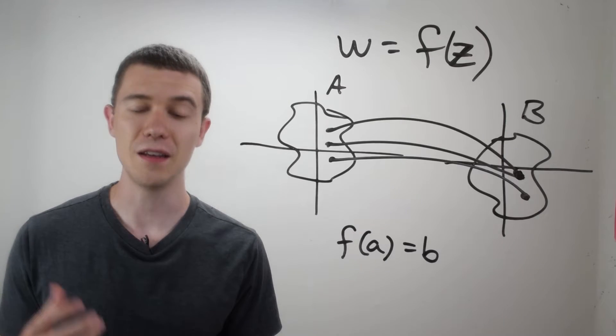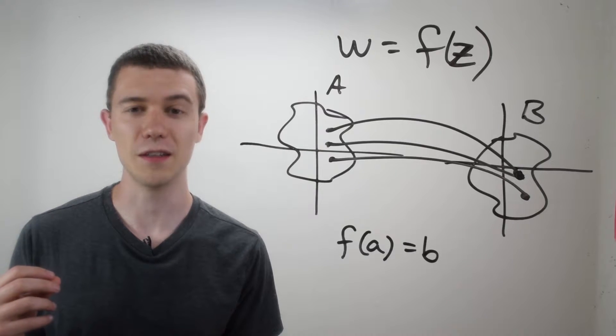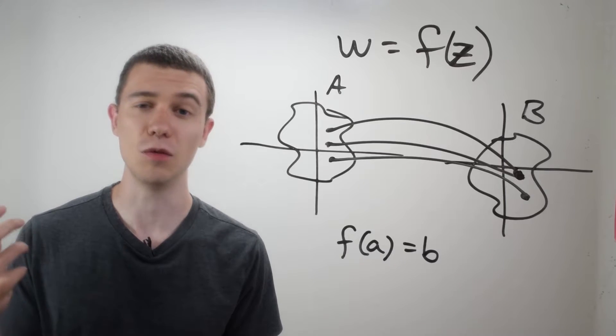Usually, we denote f of z, the complex function, by the letter w. Similar to in regular analysis, we usually say f of x equals y. Here we say f of z equals w.